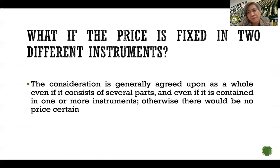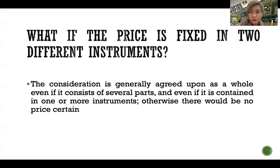What happens if the price agreed upon at the moment of perfection is fixed in separate instruments, not just in one? The rule is that the consideration is generally agreed upon as a whole, even if it consists of several parts and even if it is contained in one or more instruments. The law is in favor of there being a valid cause or consideration. Even if the price is fixed in different instruments, it will be construed as a whole, and the agreement between the parties will continue to be valid.